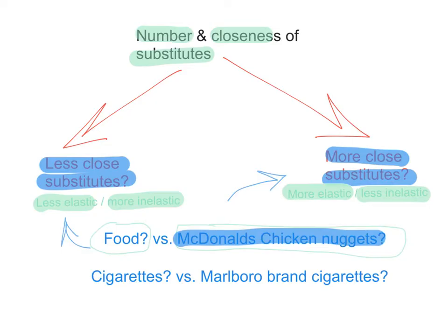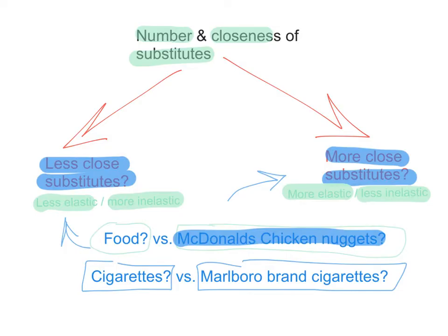Let's have a look at cigarettes as well. Cigarettes in general are likely to have quite inelastic demand, when compared to a specific brand — Marlboro brand cigarettes — because there are lots of substitutes and lots of choices that consumers have. The demand for the Marlboro brand is likely to be more elastic, because there are more close substitutes.